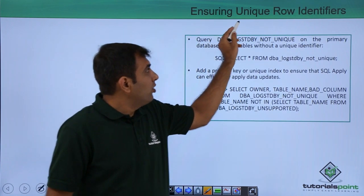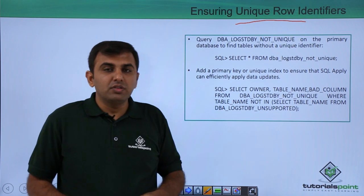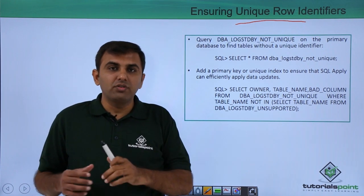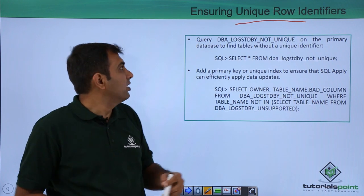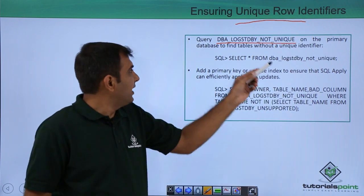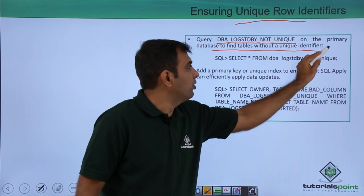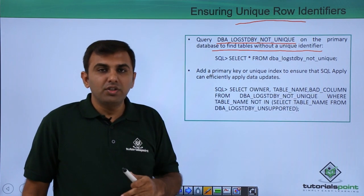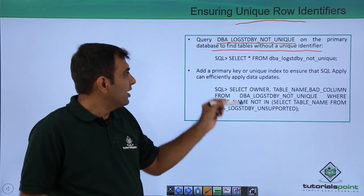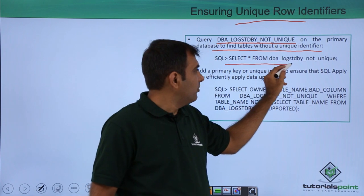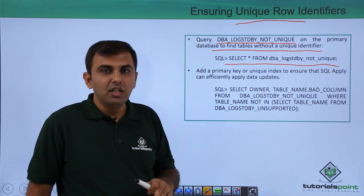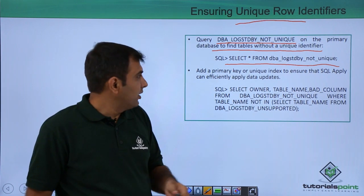Next, ensuring row uniqueness. If you have duplicate rows in a primary database table, those will not be applied to the logical standby. Query DBMS_LOGSTDBY_NOT_UNIQUE on the primary database to find tables without a unique identifier — meaning no unique index, no unique constraint, and no primary key. Execute: SELECT * FROM DBA_LOGSTDBY_NOT_UNIQUE.